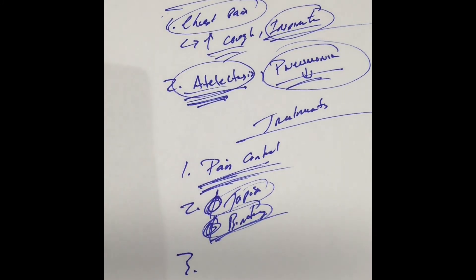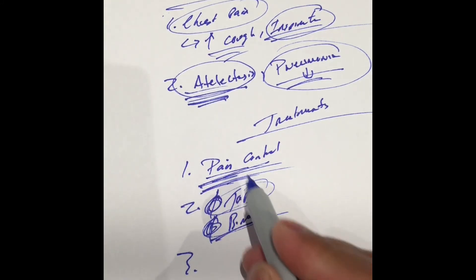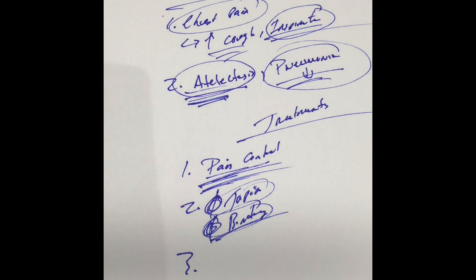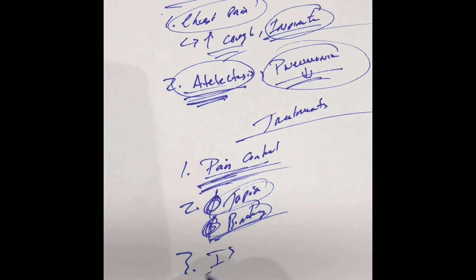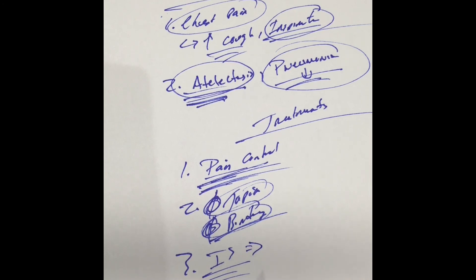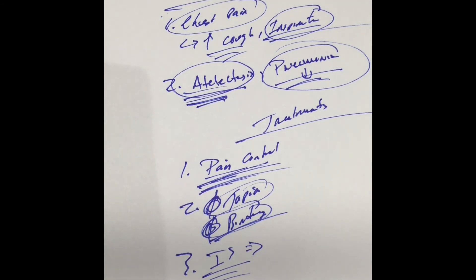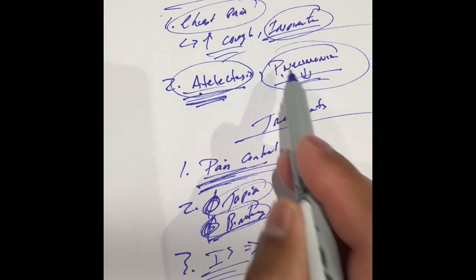Number three: You're going to encourage these patients, after adequate pain control of course, to take deep breaths, to cough, to use their incentive spirometer, and to ambulate. Again, the purpose of deep breathing and coughing is to prevent atelectasis and pneumonia.